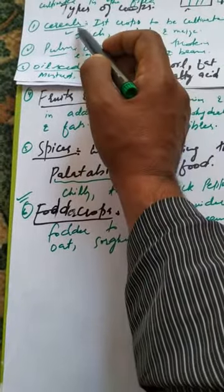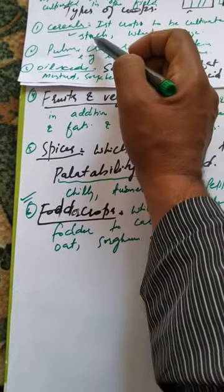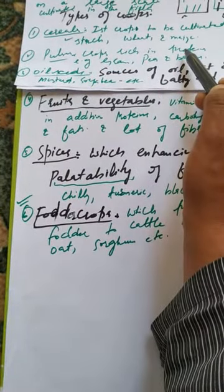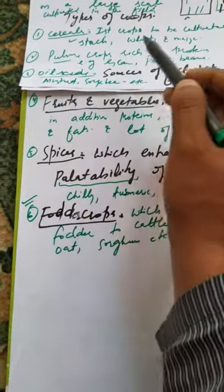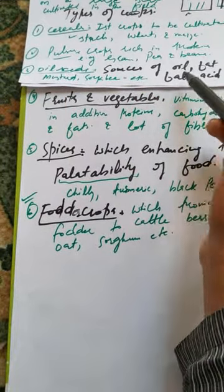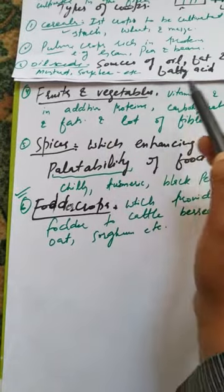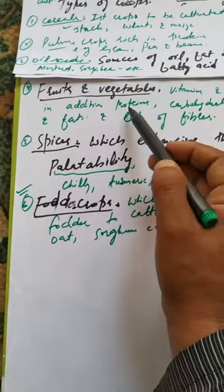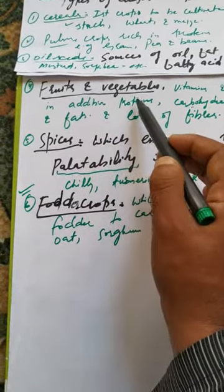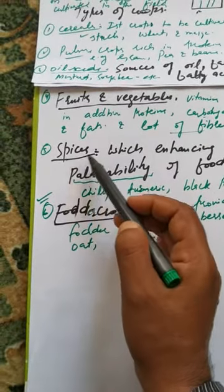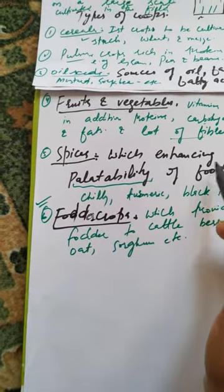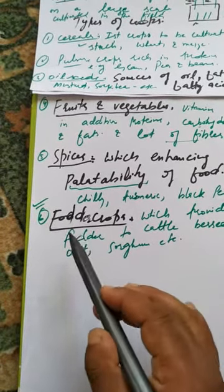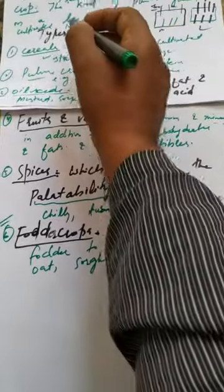So to summarize: a crop is the same kind of plants grown on a large scale, cultivated in a field. Types of crops include cereals — those crops rich in starch and the first to be cultivated; pulses — crops rich in proteins; oil seeds — crops rich in oil, fat and fatty acids; fruits and vegetables — which provide vitamins, minerals, carbohydrates, fats, proteins and fiber; spices — which increase the palatability and taste of food; and fodder crops — those crops which provide fodder to the cattle.